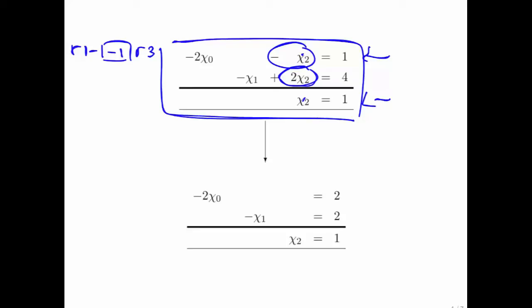And then we replace the second row by subtracting off two times the third row. And if you do the arithmetic right, then you end up with this system right here.